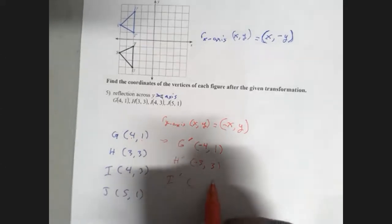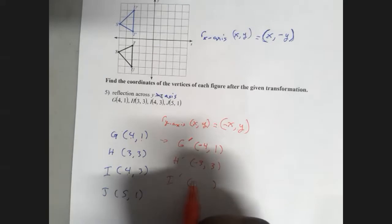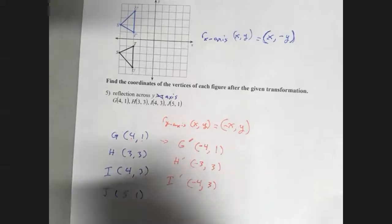I prime becomes the opposite, so that's going to be negative 4. Y stays the same, positive 3.